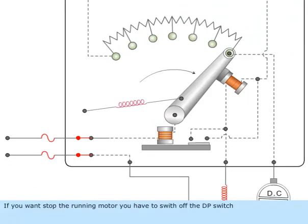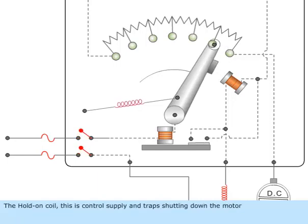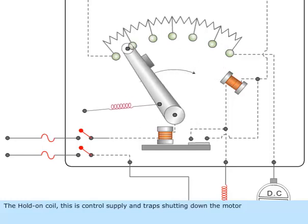If you want to stop the running motor, you have to switch off the DP switch. The hold on coil loses control supply and traps shutting down the motor.